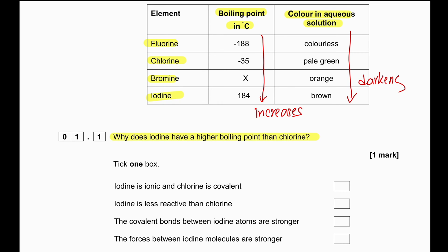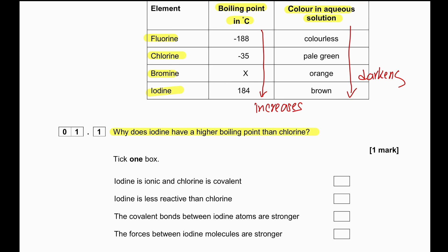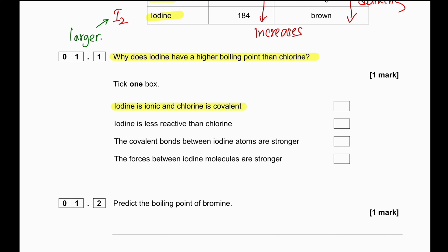Why does iodine have a higher boiling point than chlorine? Both iodine and chlorine are molecular, but iodine is a larger molecule. Since it is larger, there will be more attraction between the molecules. Options like 'iodine is ionic' are wrong — both are covalent. When we boil something, we do not break the covalent bond between the atoms; we break the intermolecular forces. So the forces between iodine molecules are stronger compared to those of chlorine.